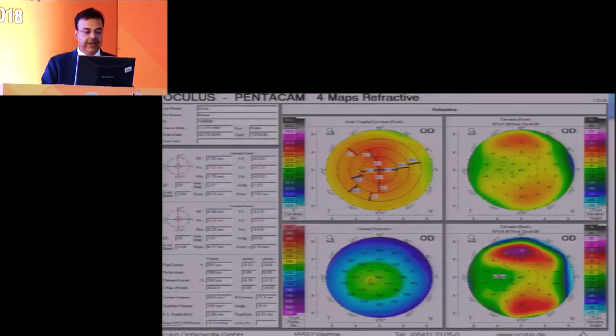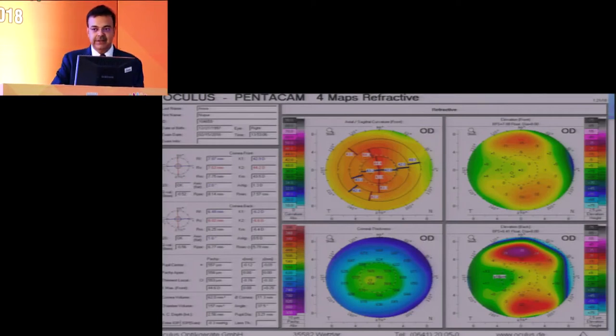Now she has a correction of minus 7 with 0.5 cylinder. Would Dr. Chitra, would you go ahead and operate this patient? You shouldn't show the bellend? Yeah that's where. So where she was worked up there was no provision for a bellend Ambrosio map. So I had only these maps to go by.